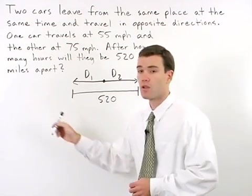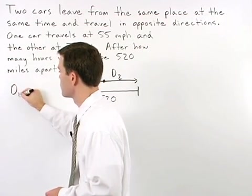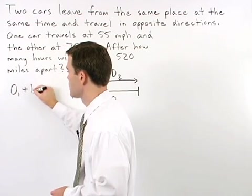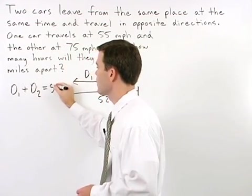So setting up a little equation, we have the distance the first car travels, or D1, plus the distance the second car travels, or D2, equals 520.